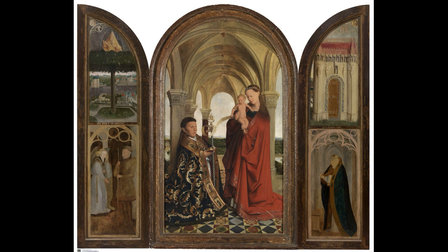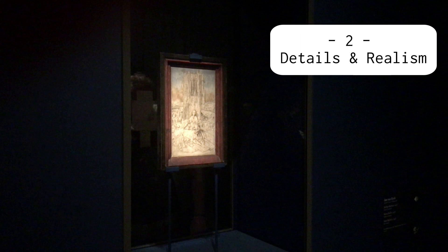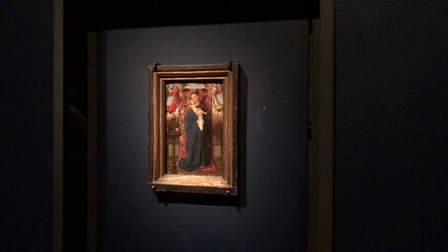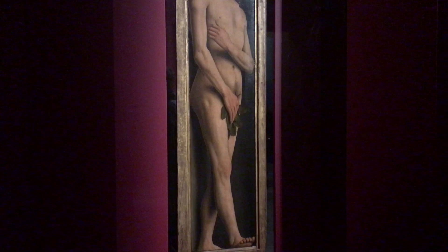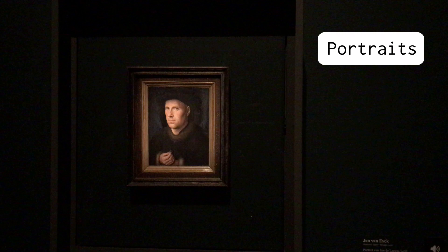Jan van Eyck was observing the world around him in a completely new way. His focus on details was previously unseen, but the realism he shows on his paintings isn't visible in details only — also in the way he shows the volume of the human figure and depth of space, and by the way he presents light and shadow. That's especially visible in his portraits, where you can see a big contrast between illuminated faces and dark black backgrounds.